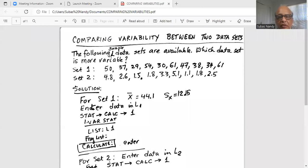So comparing variability between two data sets, the following sample data sets are available. Which data set is more variable? So we have set one, a set of data sets in the first row, set two, a set of data set in the second row.